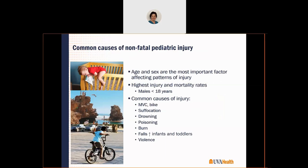Common causes of pediatric injury are age-based and sex-based. The highest injury and mortality rates occur in males under 18 years old. Common causes include car crashes, bikes, suffocation, drowning, poisoning, burns, and falls — especially in infants and toddlers. Violence is unfortunately another cause of trauma in the pediatric population. Whether it's a toddler who doesn't know any better or an adolescent with high risk-taking behaviors, all of these things contribute to injury in the pediatric patient.